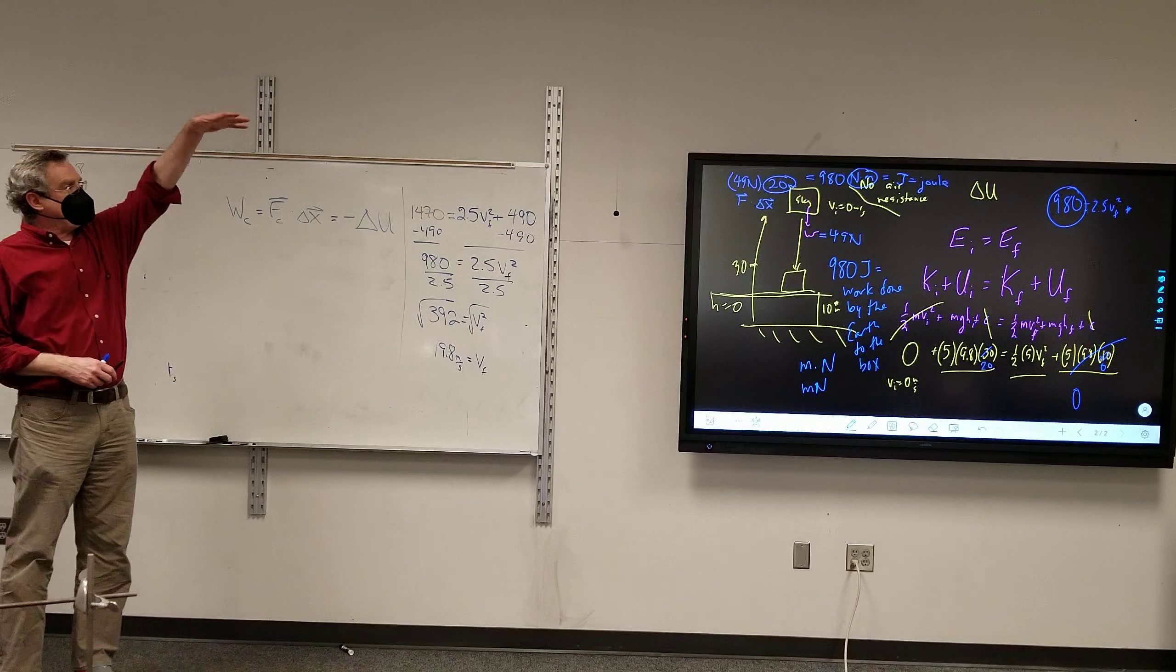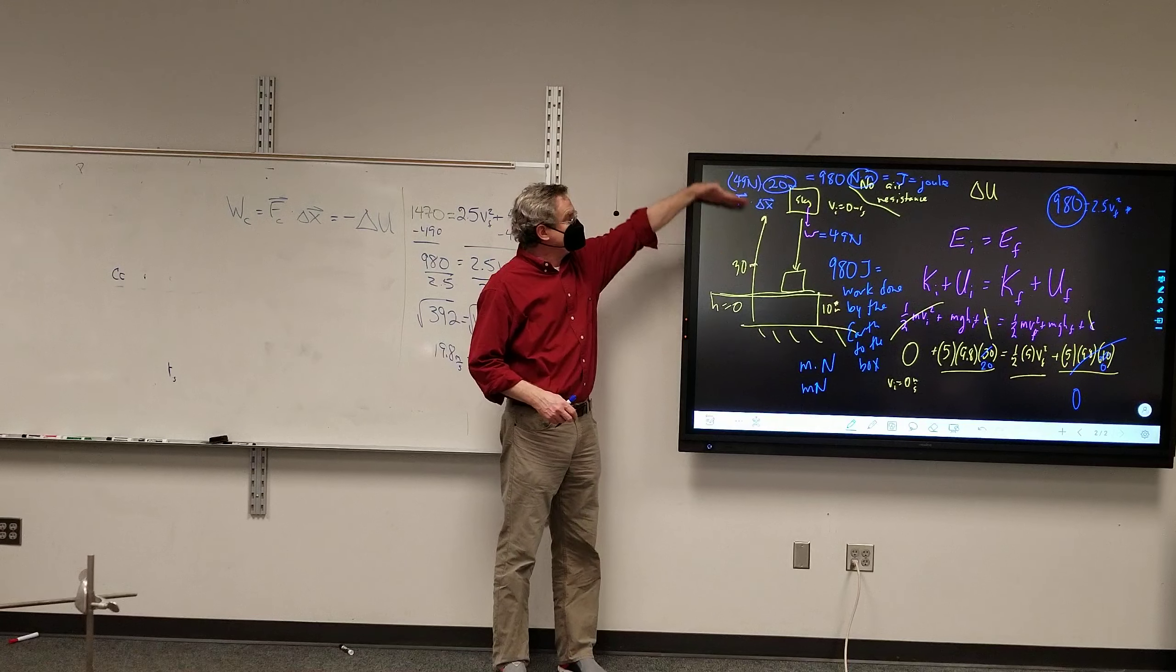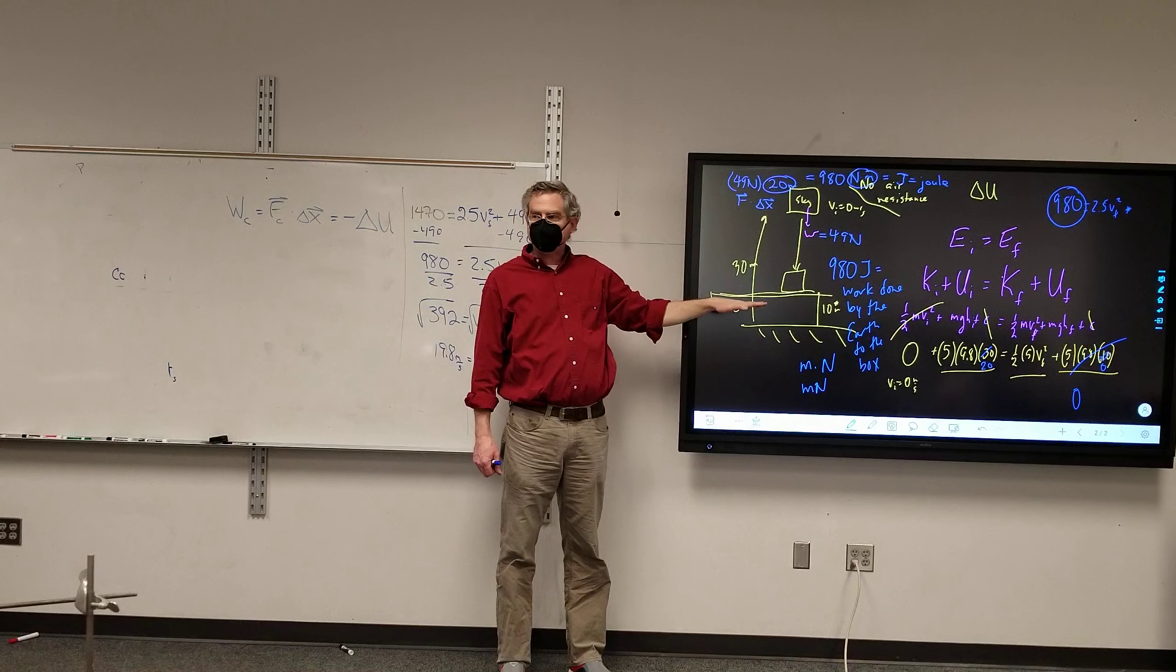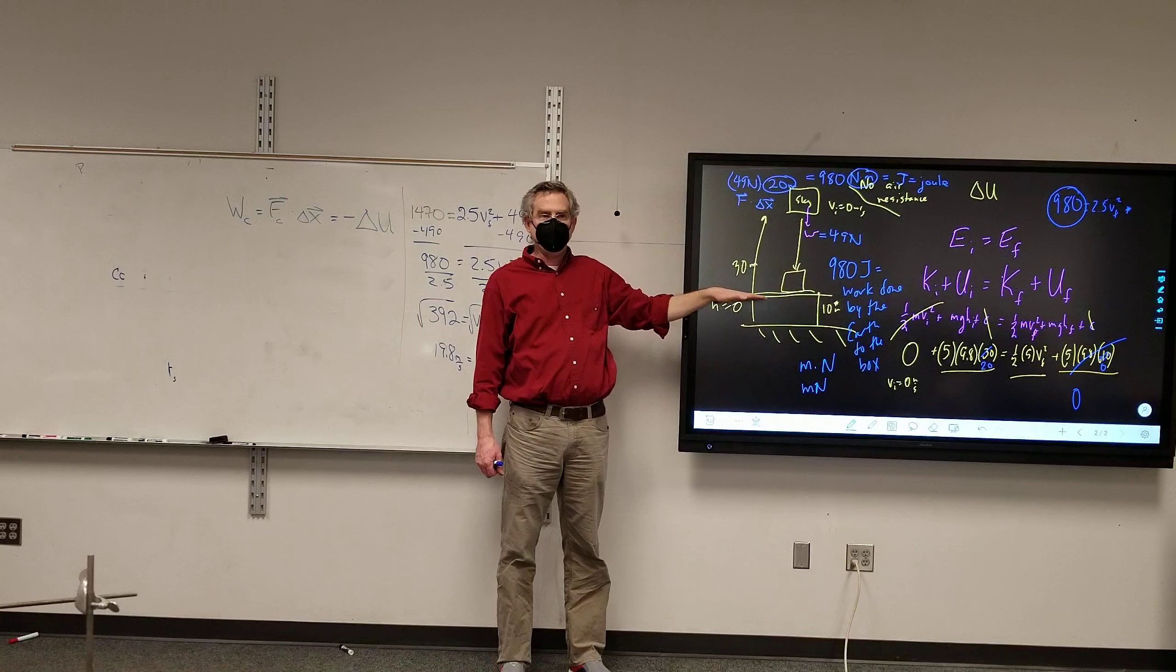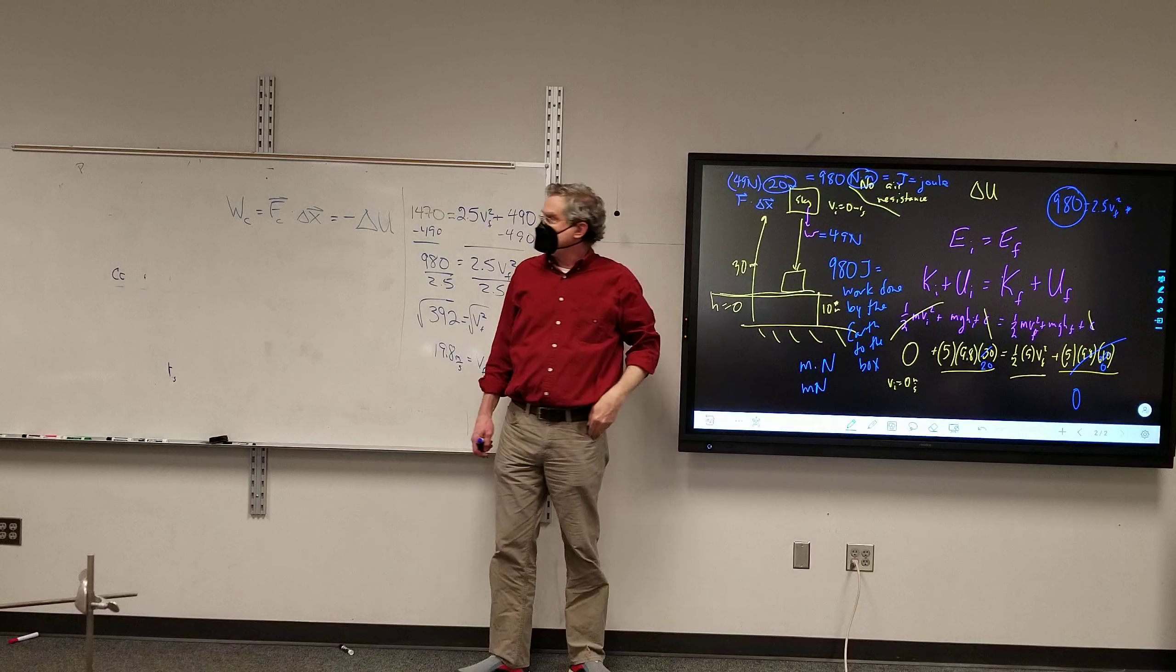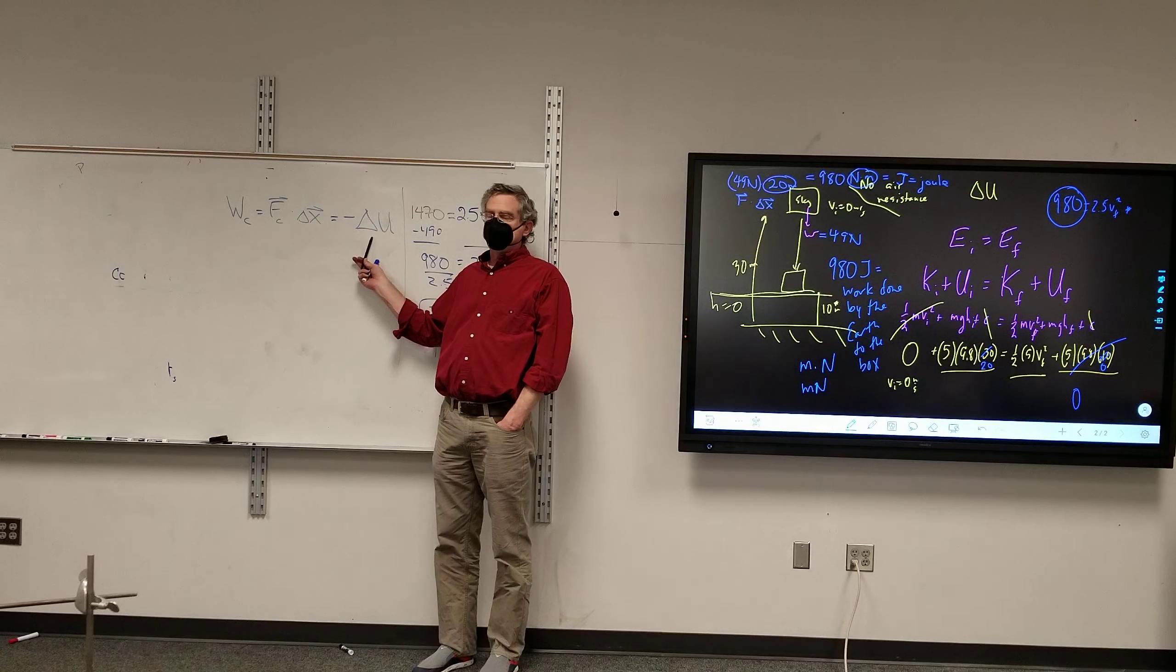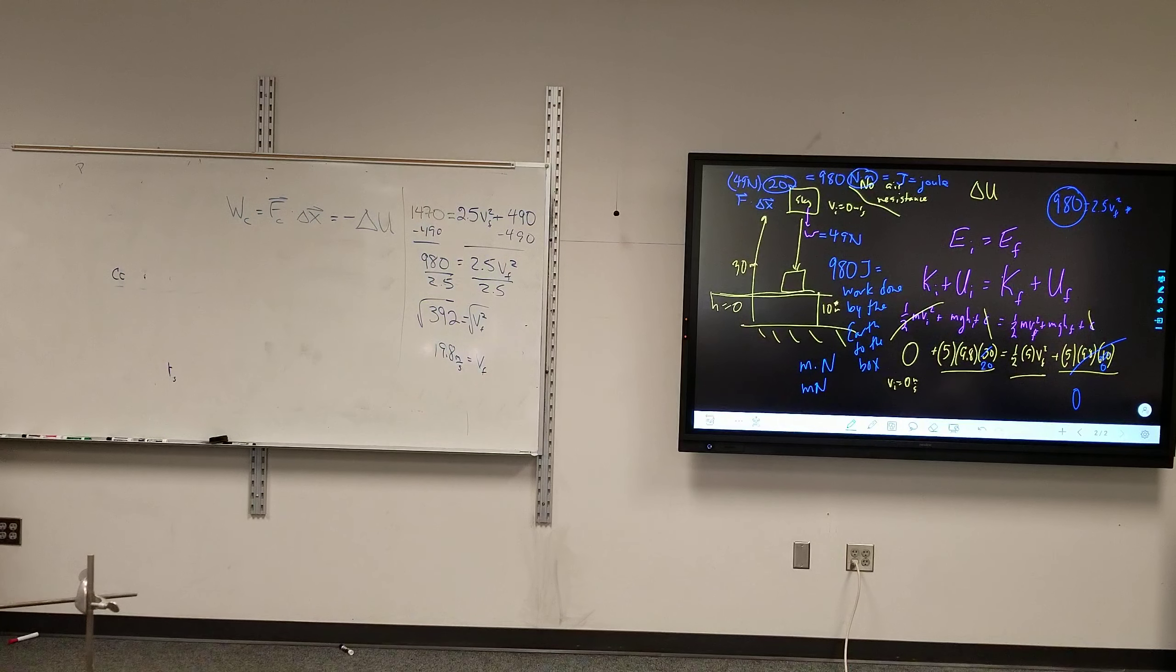Conservative work is equal to the negative change in potential energy. My potential energy started up high at 980 joules. My final potential energy was zero joules. So my change in potential energy was negative 980 joules. I lost 980 joules of potential. That got transformed into kinetic. My conservative work was positive 980. But wait, there's more.